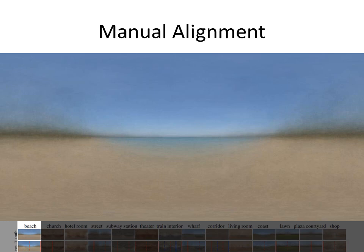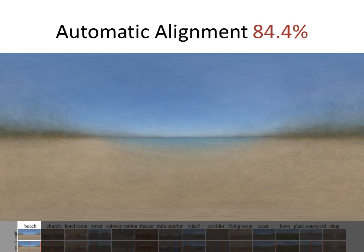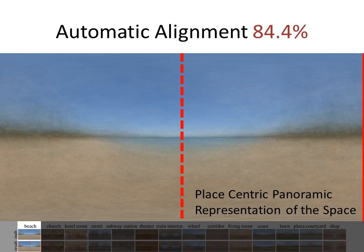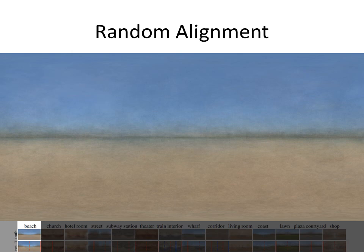This is an example of an averaged panorama from manual alignment. The place category is beach, and the averaged image shows the alignment of major regions such as the water, sand, and vegetation. This is the average panorama from automatic alignment of the beach category — the results are very good and the same structures are apparent. Here is the automatically discovered axis of symmetry. The aligned panoramas and their symmetry information can be understood as a place-centric panoramic representation of the space. For comparison, here is the average panorama when panoramas are aligned randomly — the structure of the place is no longer apparent.